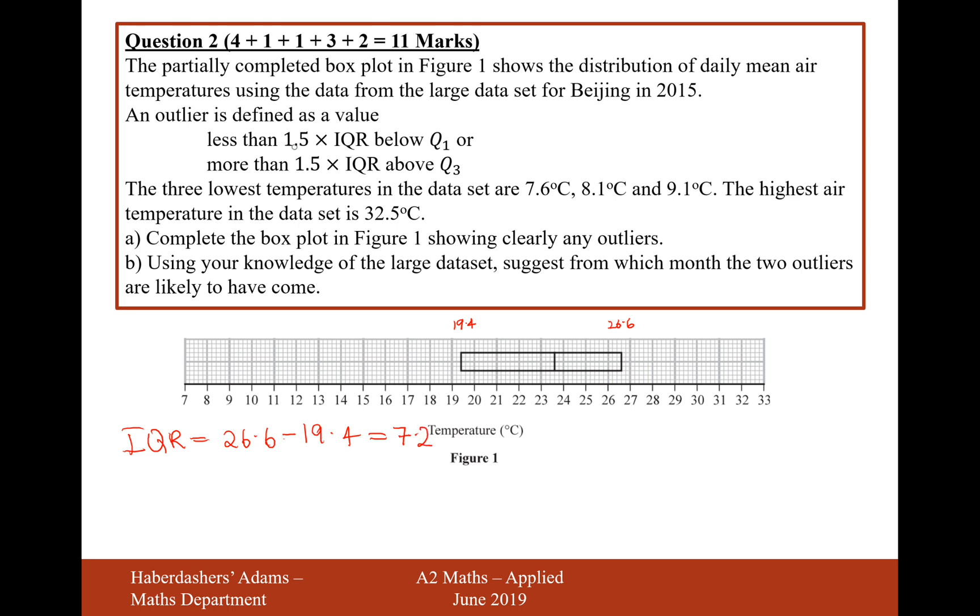Now we have to work out 1.5 times the interquartile range. 1.5 times the interquartile range. And that's going to give us 1.5 times 7.2, which is 10.8.